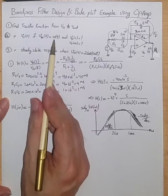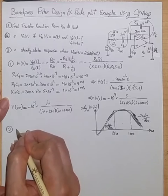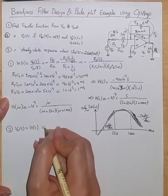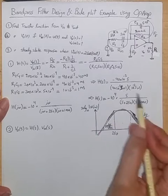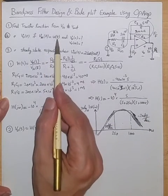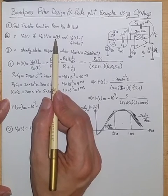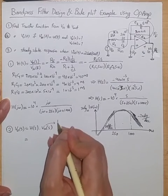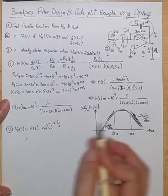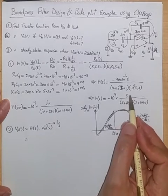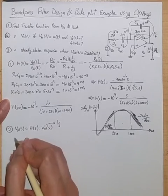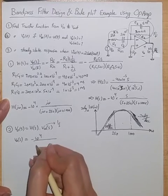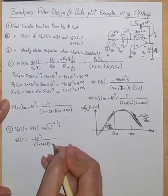For part two, finding v_out when the input is a unit step function: V_out(s) = H(s) · V_in(s). Since v_in(t) = u(t), its Laplace transform is 1/s. Multiplying H(s) by 1/s, the numerator s cancels with the denominator s, so V_out(s) = minus 10⁴ / [(s + 250)(s + 1000)].